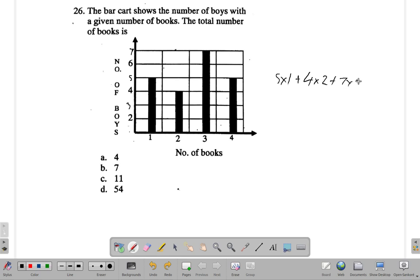Plus, you have five boys had four books each, 5 times 4. So that's 5 times 1, that's six, plus 4 times 2 is eight, plus 7 times 3 is 21, plus 5 times 4 is 20. You multiply them out.